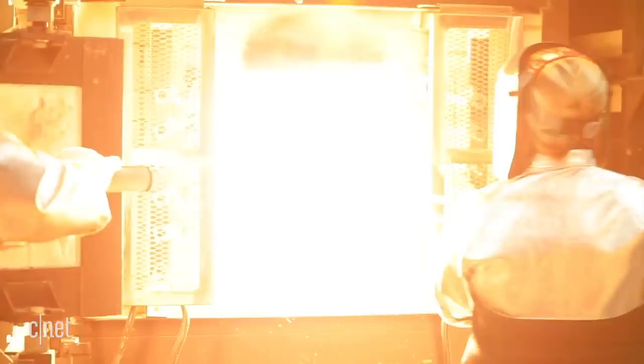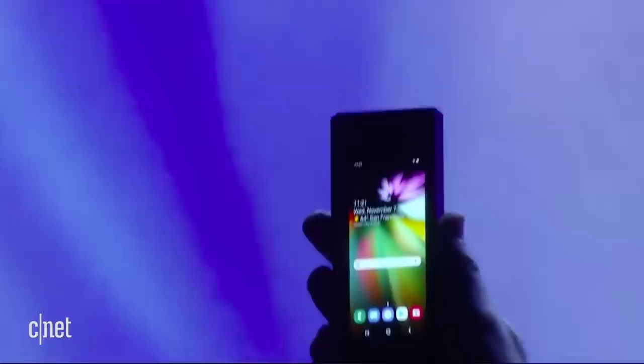This is Corning's test kitchen, where new glass recipes are baked at temperatures of over 1,000 degrees Celsius, hotter than molten lava. Their latest recipe, ultra-thin bendable glass.